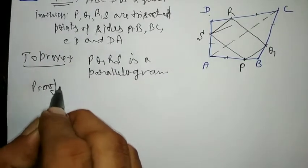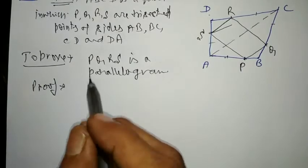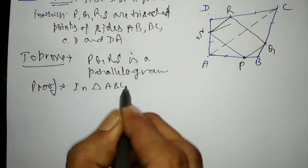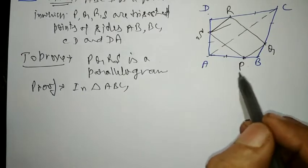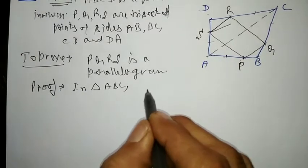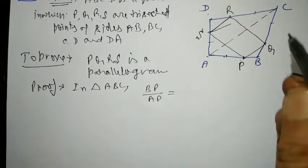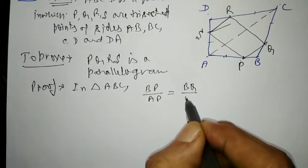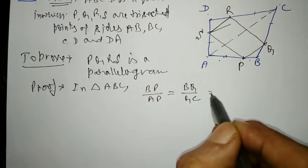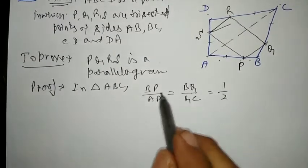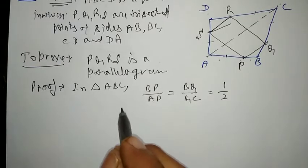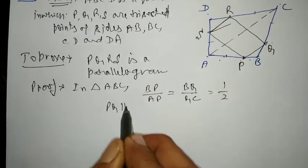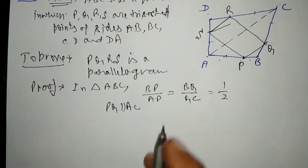Proof: In triangle ABC, BP upon AP is equal to BQ upon QC — the ratio is 1:2. Since both ratios are equal, by the converse of Thales' theorem, PQ is parallel to AC. This is equation 1.